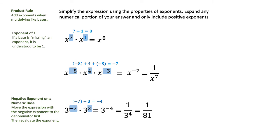All right, in the first one, there was a base that seemed to be missing an exponent. When that happens, it's understood to have an exponent of 1. So 7 plus 1 is 8.